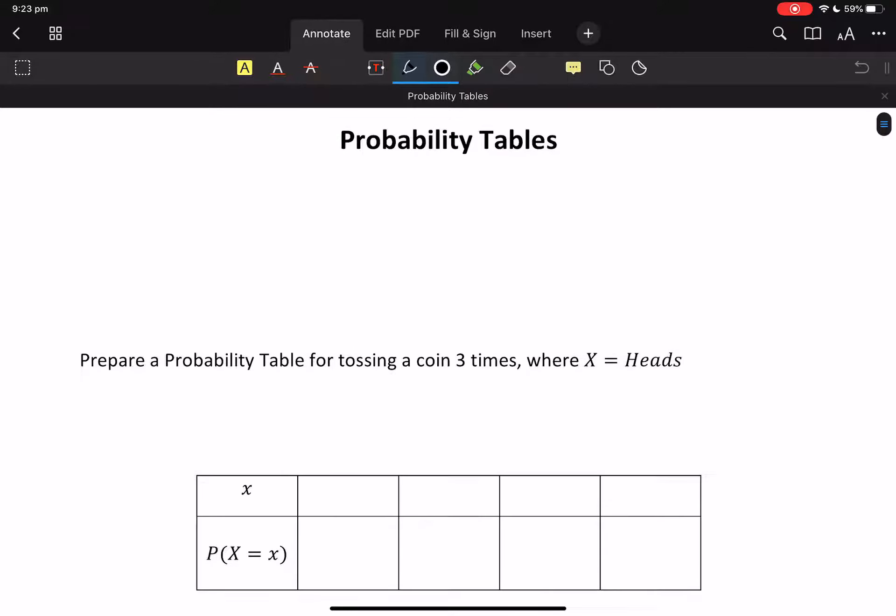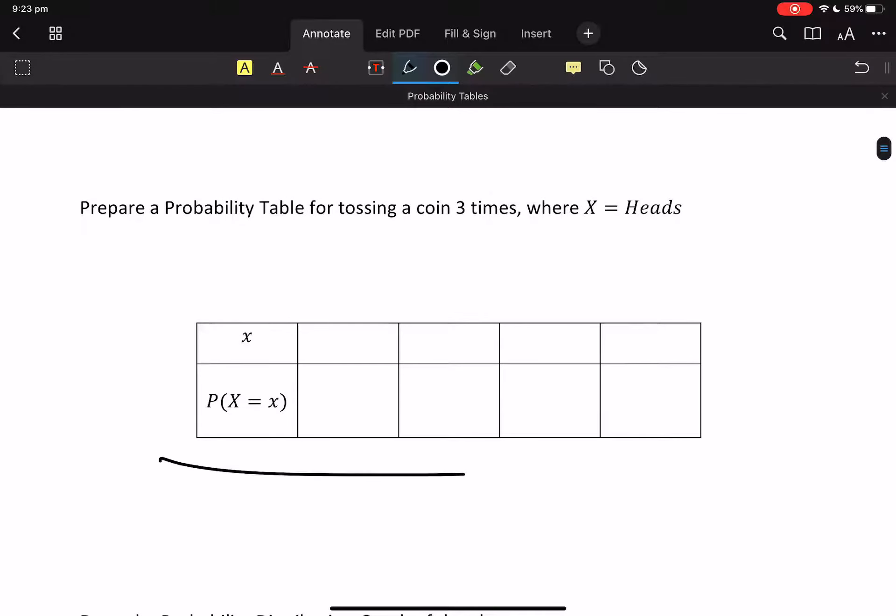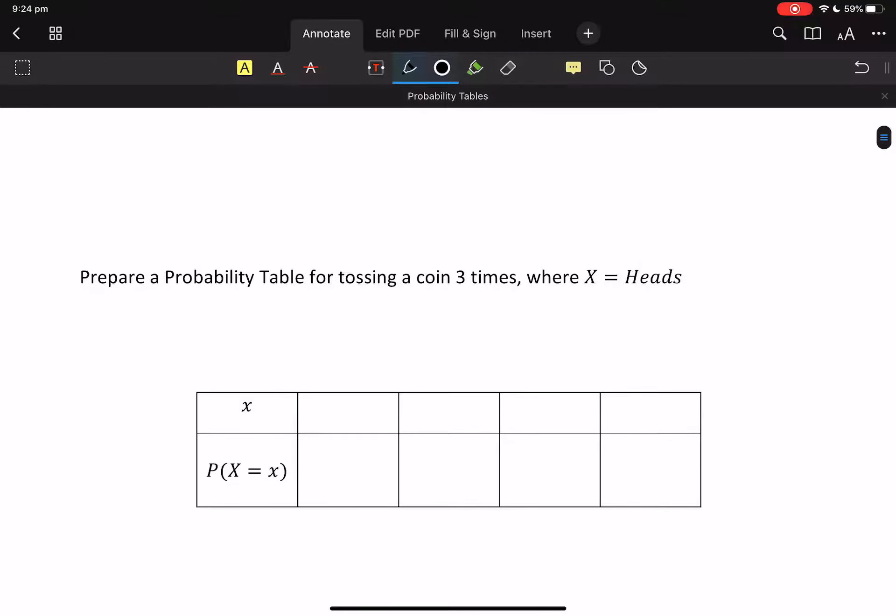We're going to talk about probability tables. A probability table is actually a table with probabilities in it. We're going to prepare a probability table when we're tossing a coin three times and this big X is heads.